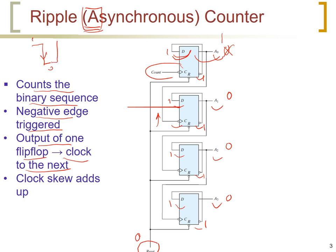At the next count pulse, the first flip-flop was 1, so its complement is 0, and that 0 is loaded in, making the output 0. Since this output changed from 1 to 0, this triggers the next flip-flop, which loads its D input of 1, making it 1. The next count becomes 0, 0, 1, 0, after it was 0, 0, 0, 1.